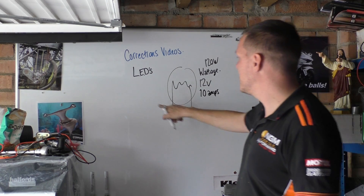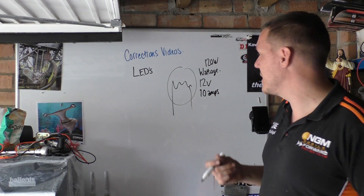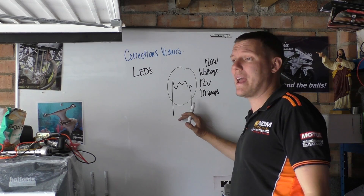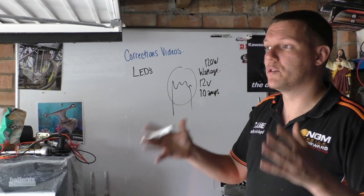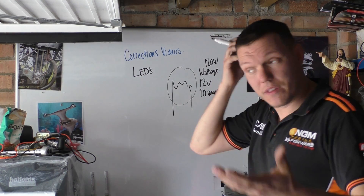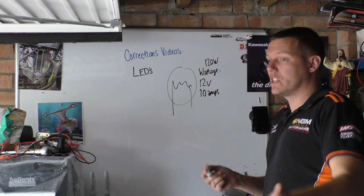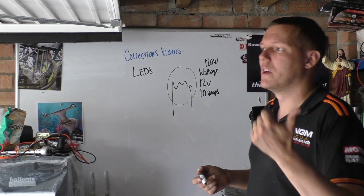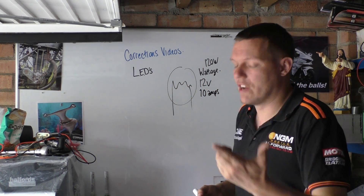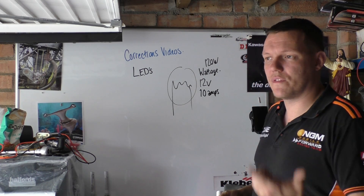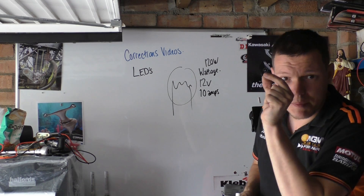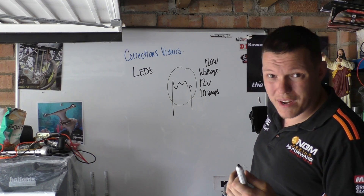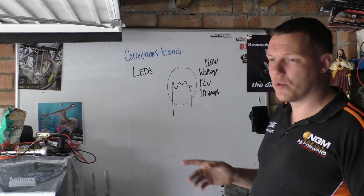What happens is, LEDs — one of the beauties of LEDs — is that they do not require as much power to produce the same amount of lumens, the same light level. This is why LEDs are good, because they don't really blow. They're generally resistant to vibration, they can be made tiny, you can have multiples, you can have brighter — you can do all these wonderful things.